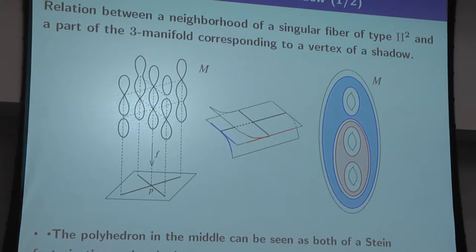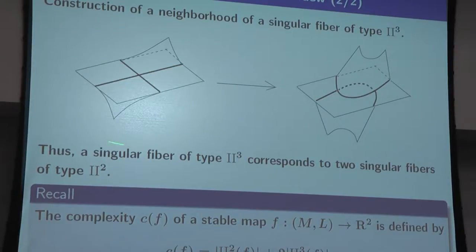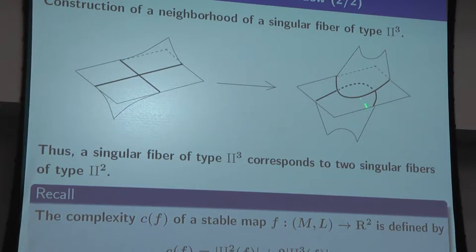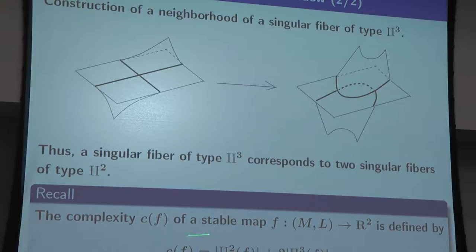This explanation covers type 2. For type 3, the Stein factorization is not a shadow and not a simple polyhedron, so we move it — entering from both sides — and it becomes a shape with two true vertices. We set the gleam to plus one here, and this doesn't change the ambient manifold. In this sense, one singular fiber of type 3 corresponds to two singular fibers of type 2, which is why we put the factor of 2 in front of type 3 in the definition of complexity.